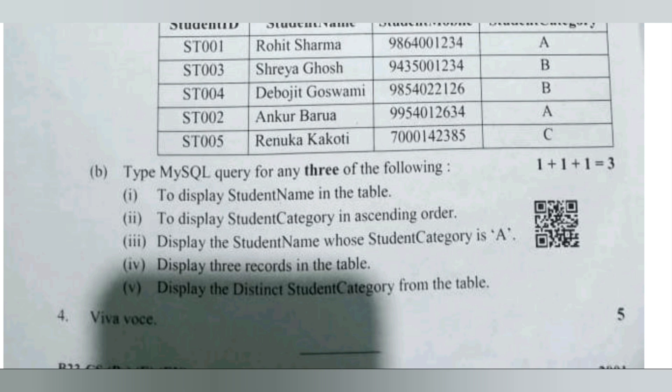Query three: display the student name whose student category is 'A' — SELECT student_name FROM student WHERE student_category = 'A'. Query four: display three records in the table. Query five: display the distinct student category from the table — SELECT DISTINCT(student_category) FROM student.